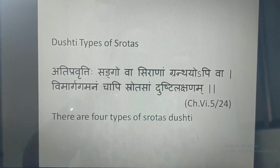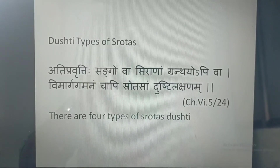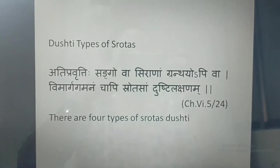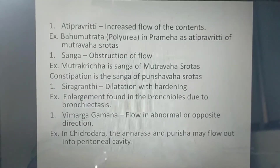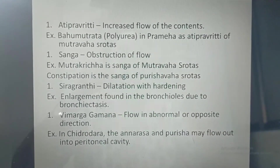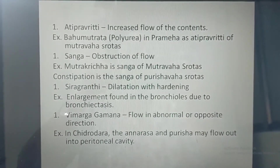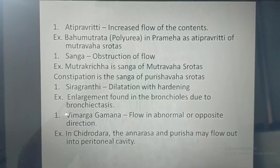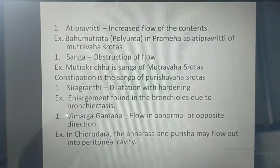This is the Dushta Srotasam Dushti Lakshana. Charak has described 4 types of Dushti. One is Atipravruti, then Sanga, then Shiragranthi, and Vimargagaman. These are the four types of Dushti seen in the Srotas. Atipravruti means increased flow of the content — that is, excess transportation of the content through the Srotas.